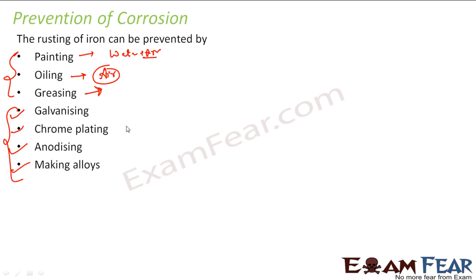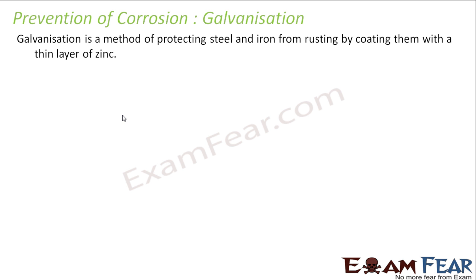Galvanization is the method of protecting steel or iron from rusting by coating them with a thin layer of zinc. Why zinc and not paint? For something like utensils, if you coat with paint, the moment you heat it for cooking, the paint will burn and peel off. So in such scenarios we use zinc, and this process is called galvanization.